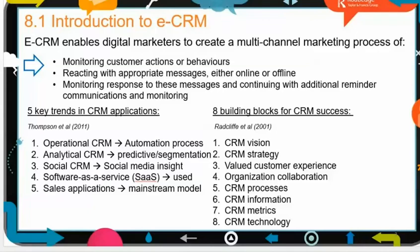That is the concept of CRM. There are five key trends in CRM application: Operational CRM, to automate the process; Analytical CRM, to conduct the predictive segmentation model — like what we did with the Euclidean distance to identify Sachin's cluster; Social CRM, to conduct social media insights. And we do it all in SaaS — software as a service — in the cloud. Previously, Microsoft Dynamics and Siebel were not in the cloud; they were on-premise software.